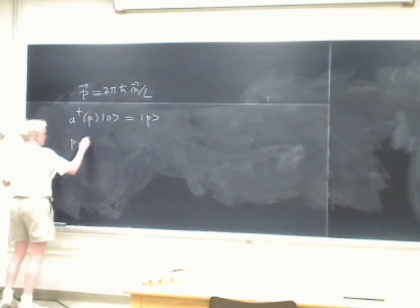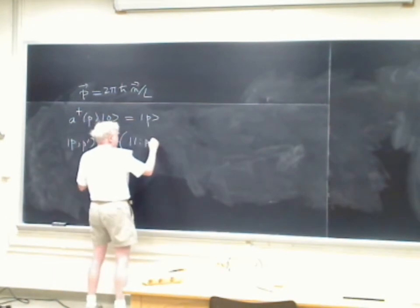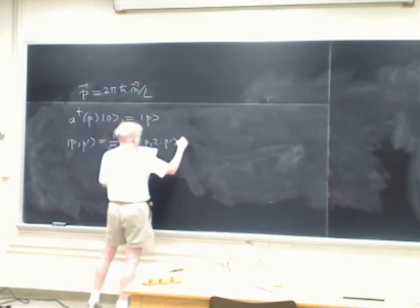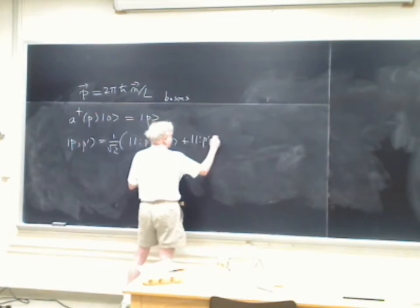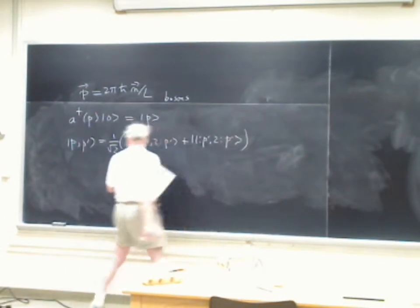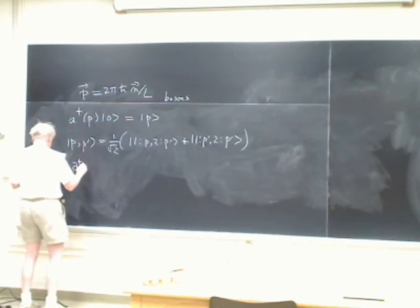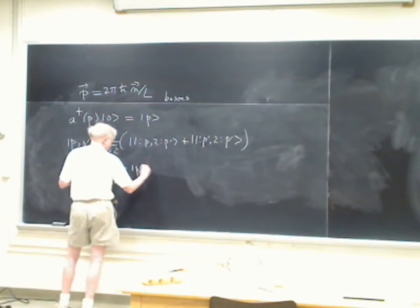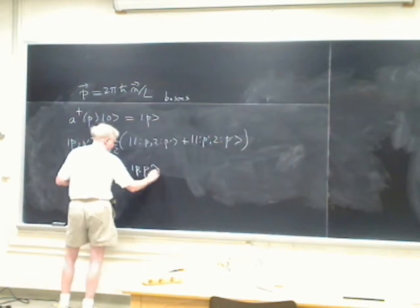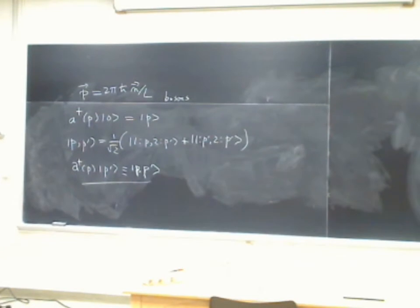The state |P, P'⟩ is 1 over root 2 times particle 1 in state P and particle 2 in state P'. We're talking bosons first. The creation operator is defined as taking the state |P'⟩ into the state |P, P'⟩. That's basically the definition of the creation operator for bosons acting on a one-boson state.